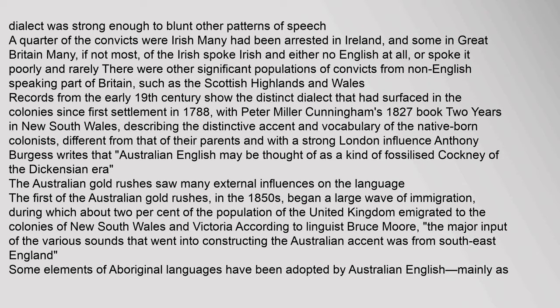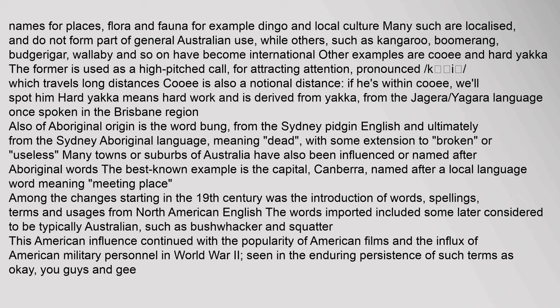Some elements of Aboriginal languages have been adopted by Australian English, mainly as names for places, flora and fauna. For example, dingo and local culture. Many such words are localised and do not form part of general Australian use, while others such as kangaroo, boomerang, budgerigar, and wallaby have become international. Other examples are 'cooee' and 'hard yakka'. The former is used as a high-pitched call for attracting attention, which travels long distances. 'Cooee' is also a notional distance — 'if he's within cooee, we'll spot him'. Hard yakka means hard work.